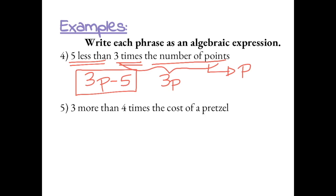Number 5, 3 more than 4 times the cost of a pretzel. The cost of a pretzel is the unknown, and I'm going to label it with the variable P. Now first, we can show 4 times the cost of a pretzel, so we can write that as 4P.